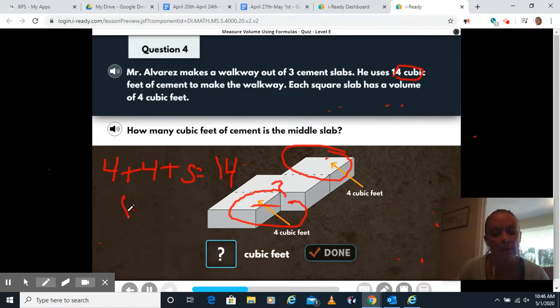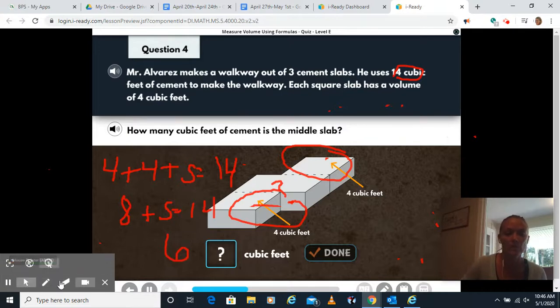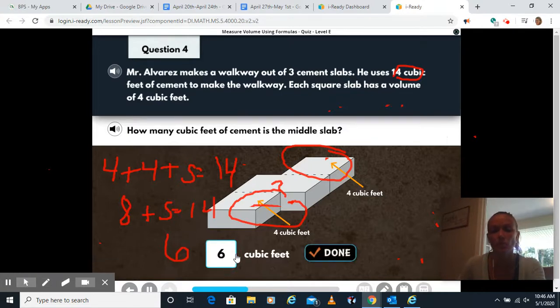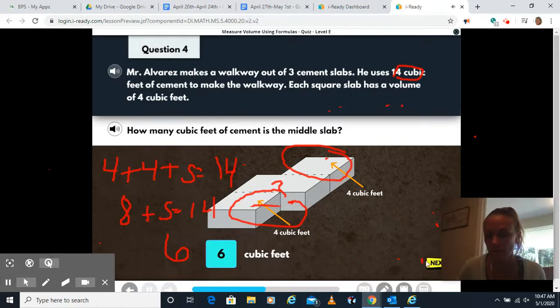So four plus four is eight, plus whatever that middle slab is, is 14. So eight plus what is 14? Eight plus six. So it'll be six on our middle slab. You could do 14 minus eight.